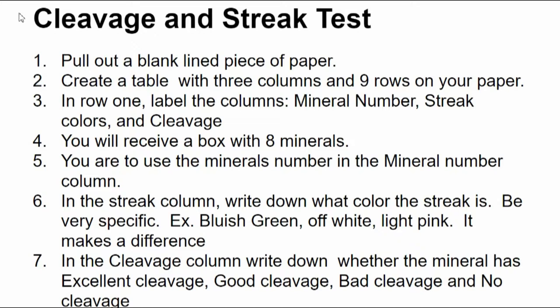In the streak column, you're going to write down what the color streak is. Now, be very specific because there is a difference between a bluish green and a bright green or just plain green. You might have an off-white or a very bright white. These actually do make a difference when you are trying to identify a mineral. And then in the third column, in the cleavage column, you're going to write down whether the mineral has excellent cleavage, good cleavage, bad cleavage, which means you can tell that light's reflected, it's just not very good. And no cleavage at all, which means when you hold it up to the light, you just don't get any reflection back to your eyes. You're going to finish this. Please do not damage my minerals.